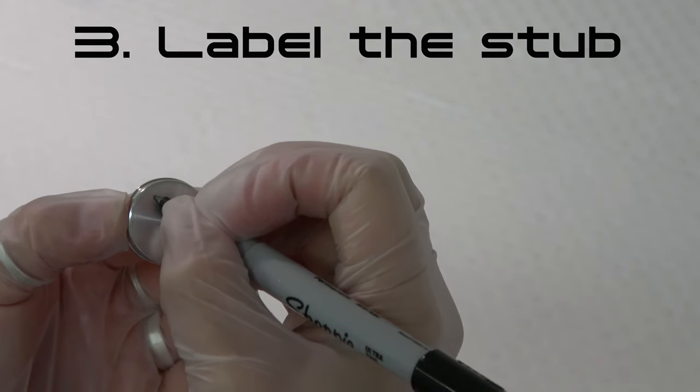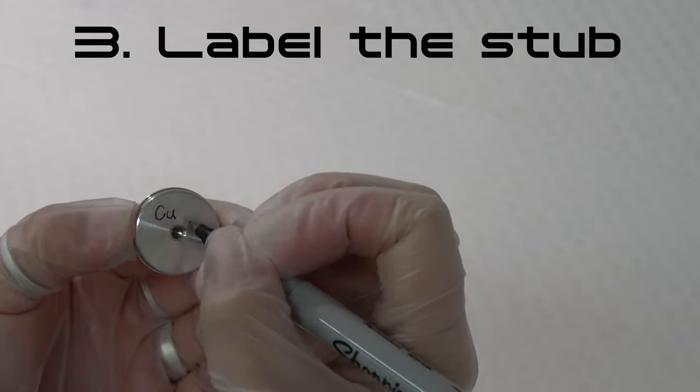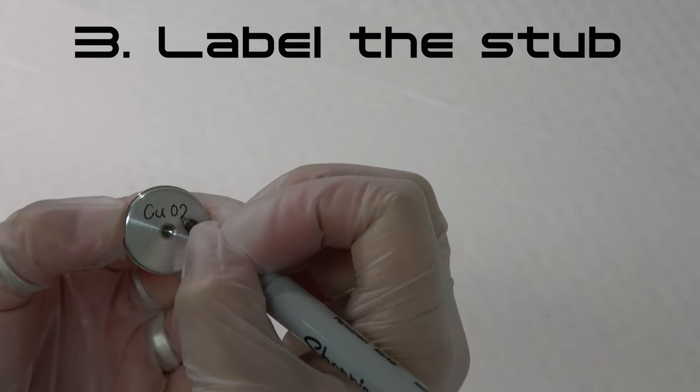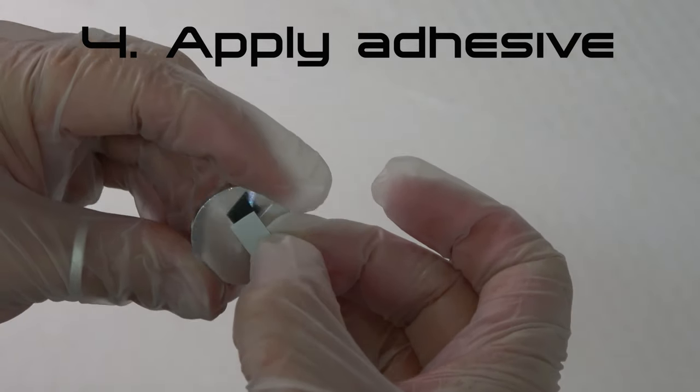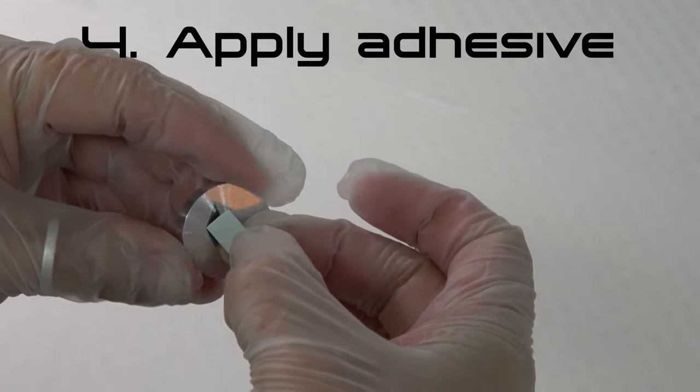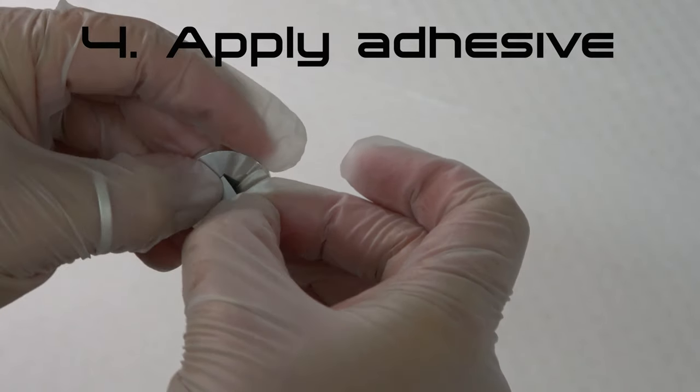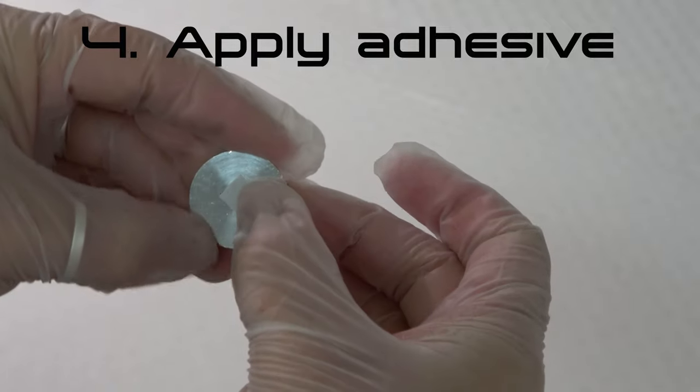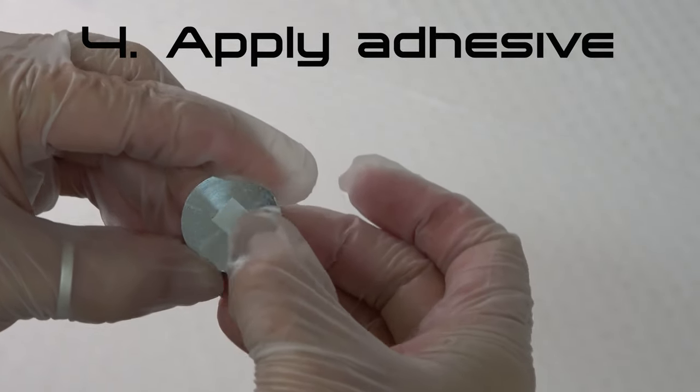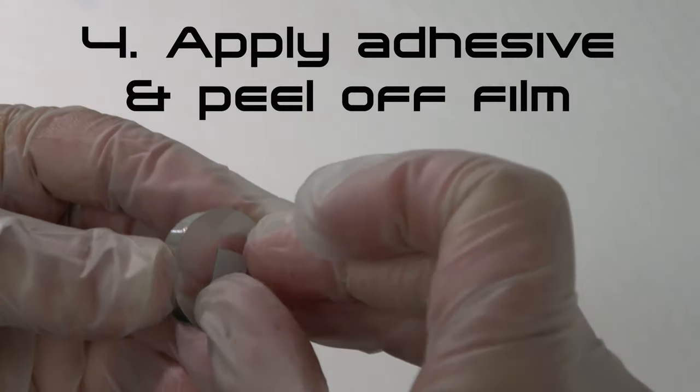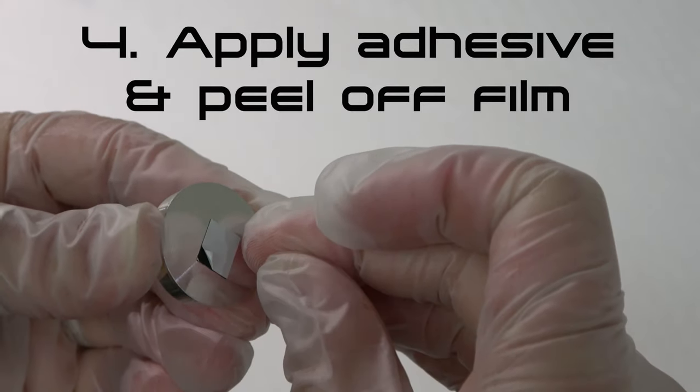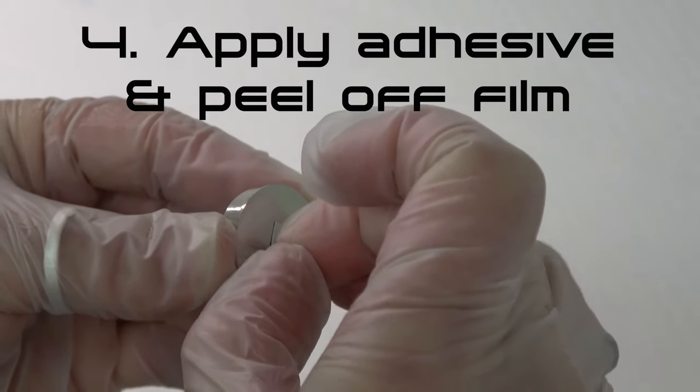Step 3: Label the underside of your SEM stub with the sample name or ID code. Step 4: Place one side of the double-sided adhesive onto the SEM stub. Use only enough adhesive to ensure that the sample can be securely attached to the stub. Remove the protective film to expose the surface of the double-sided adhesive.